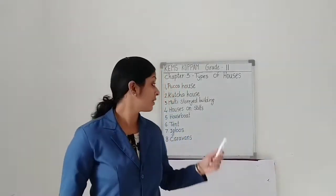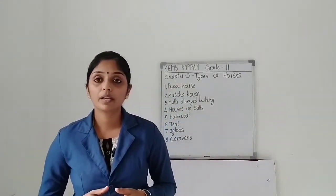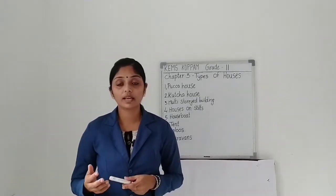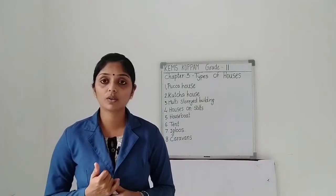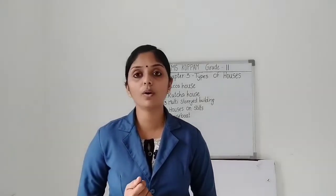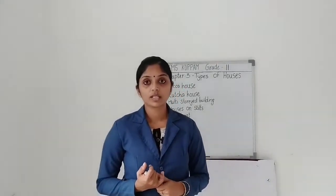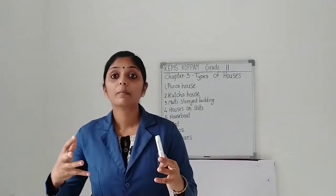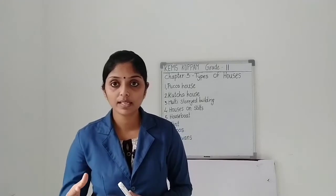Next, Kaccha houses. Kaccha houses are made up of straw, mud, bamboo and wood. These houses are called Kaccha houses. These houses are not very strong — they are weak houses. We can make them easily.